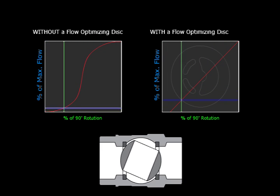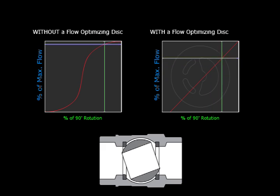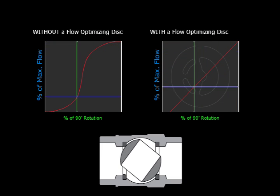Whereas on the valve without the optimizer, there's a sudden increase in the middle and not much change near the fully open and closed extremes.